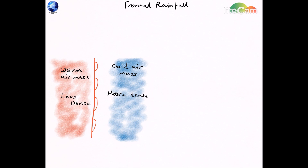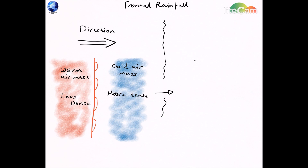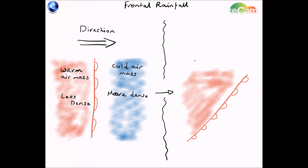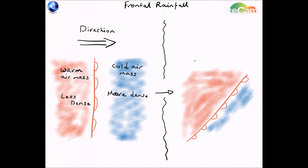The warm air mass is much less dense — it has more energy, the particles move around faster, therefore it takes up more space and it's less dense. The cold air mass is far more dense. And because these different air masses have got different densities, they find it very hard to mix. You don't get a semi-warm or semi-cool air mass; they tend to keep their distinct layers.